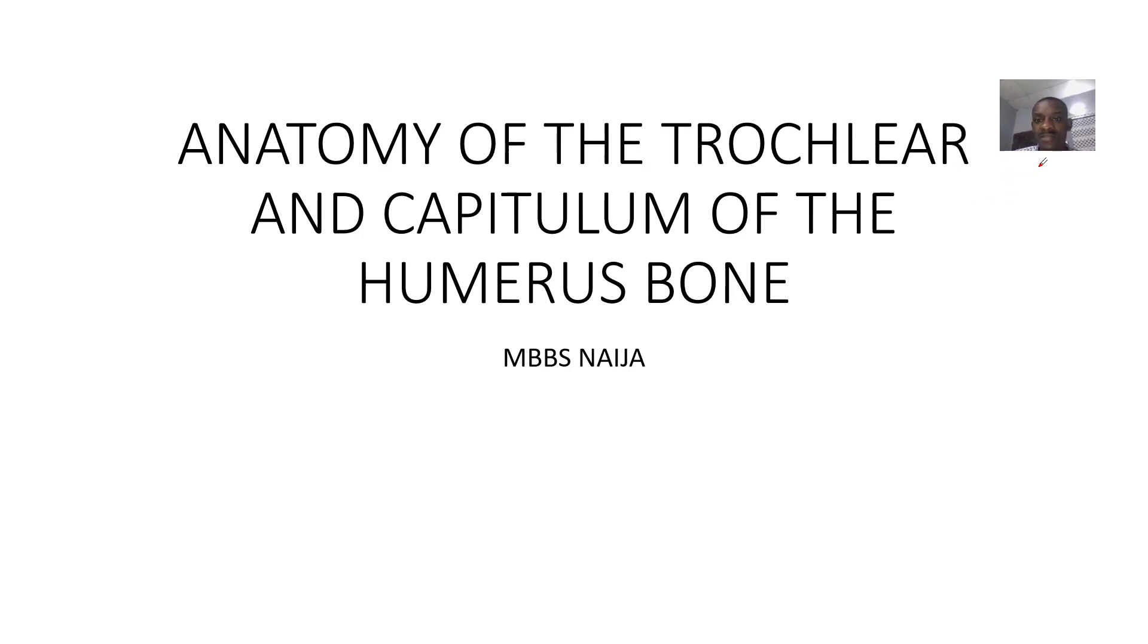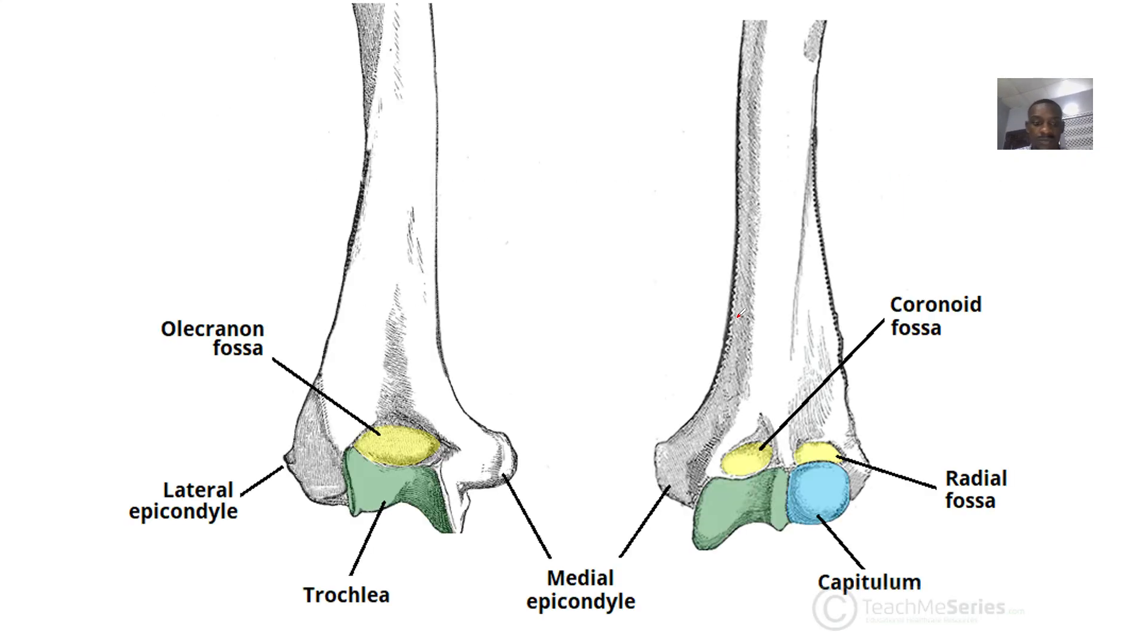Alright, for the next parts of the humerus bone, we'll be looking at the distal end of the humerus. At the distal end, we have these two parts: